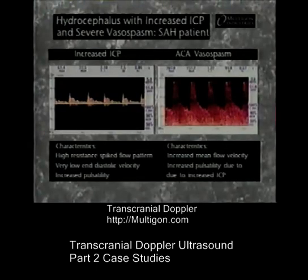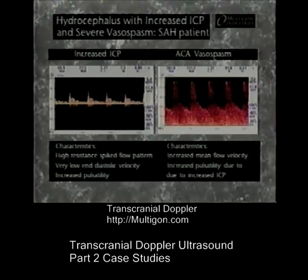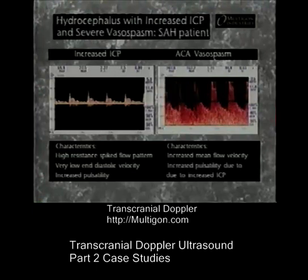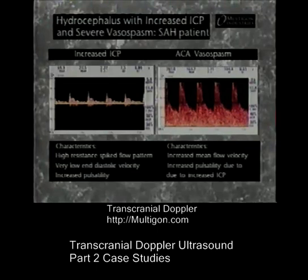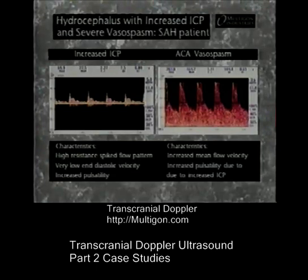Markedly increased intracranial pressure produces a high resistance TCD signal with decreased end diastolic mean flow velocities and increased pulsatility, as shown in this TCD waveform of the MCA. In this patient with subarachnoid hemorrhage, hydrocephalus coexists with severe ACA vasospasm. The ACA waveform shows a significant focal mean flow velocity increase with a concurrent increase in pulsatility. Focal velocity changes and pulsatility of flow are key findings on TCD as indicators of the pathophysiology of stroke and related syndromes.